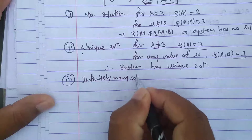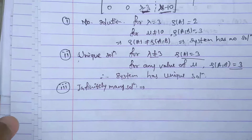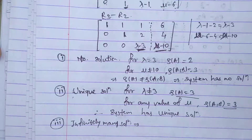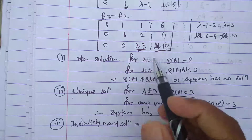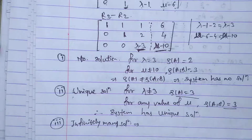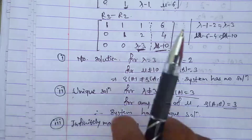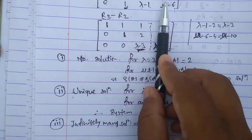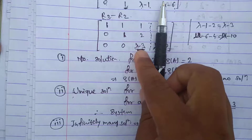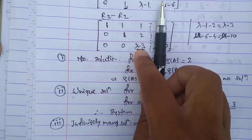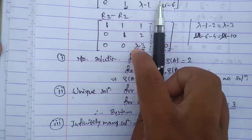Infinitely many solutions: the system has infinitely many solutions when rank of A equals rank of [A|B] but this rank is strictly less than the number of unknowns, which is 3. If rank is 2, we need both rank of A and rank of [A|B] to be 2. Rank of A becomes 2 when lambda minus 3 equals 0, i.e., lambda equals 3.